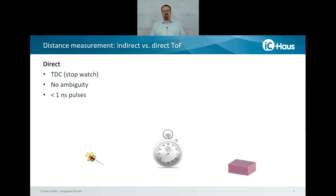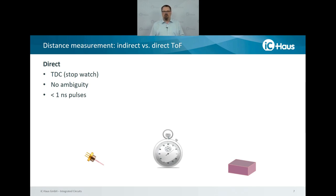With direct time of flight distance measurement, you use a time-to-digital converter — essentially a high-resolution stopwatch — to measure the time it takes the laser pulse to travel back and forth from the object. The advantage is that at moderate repetition rates, you get a working distance of about 100 meters without ambiguity. If you can make the laser pulses shorter than a nanosecond, you reach a rather high depth resolution. This is why we want to generate ultra-short laser pulses.